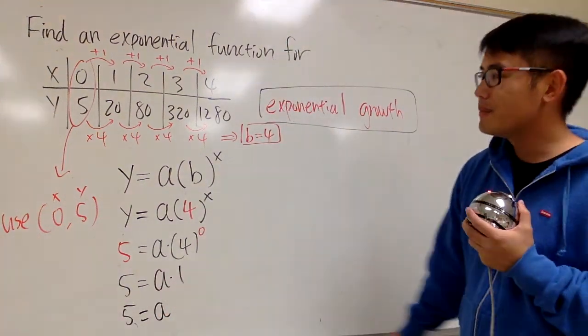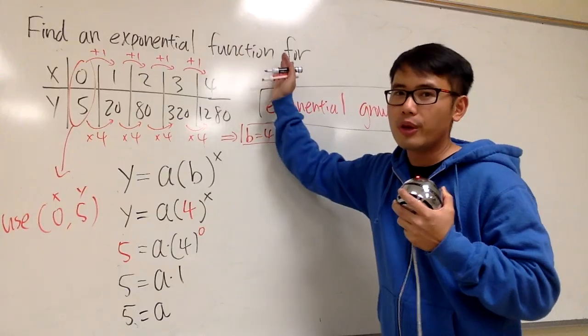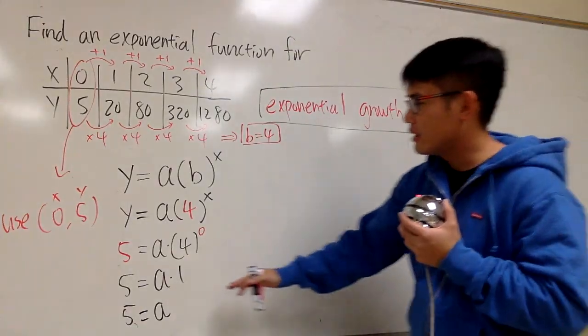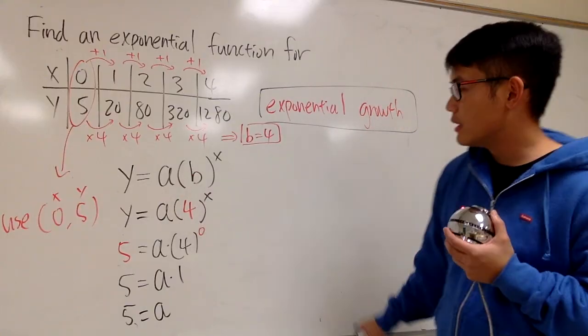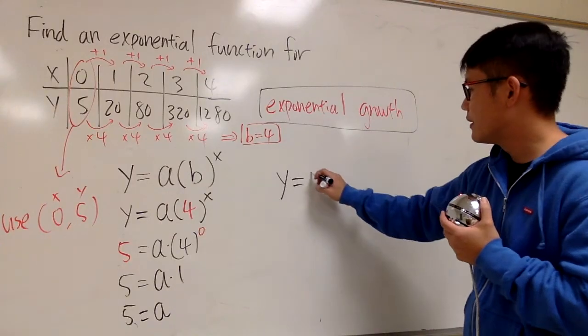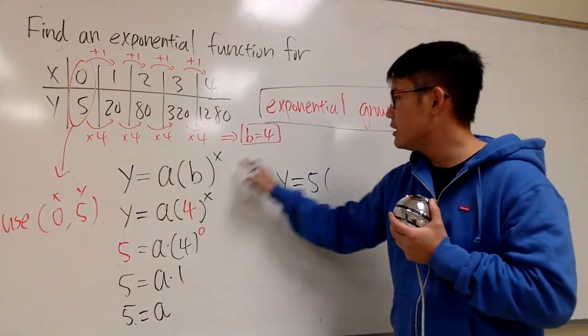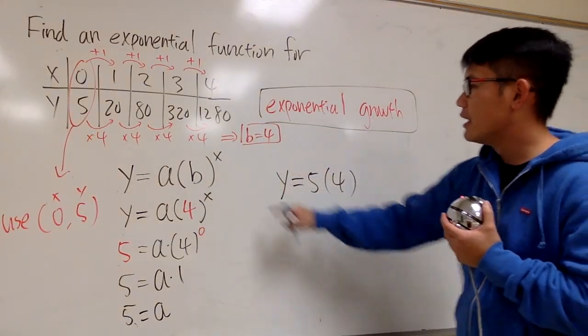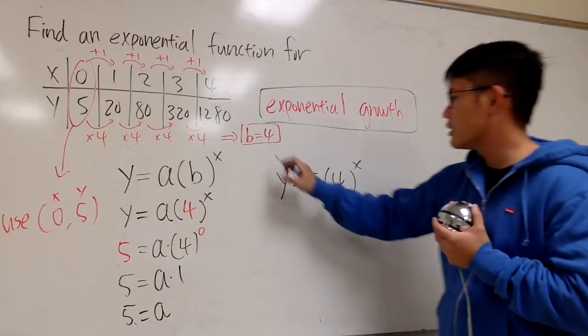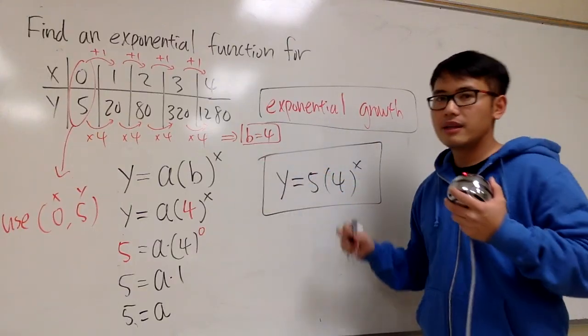Finally, the answer. Remember, whenever you're trying to write an equation or a function, the x and y stays. And plug in the a and b values here. So answer, it will be y equals to a is 5, parentheses, b is 4. And then the x is in the exponent. That's why it's an exponential function. This is it.